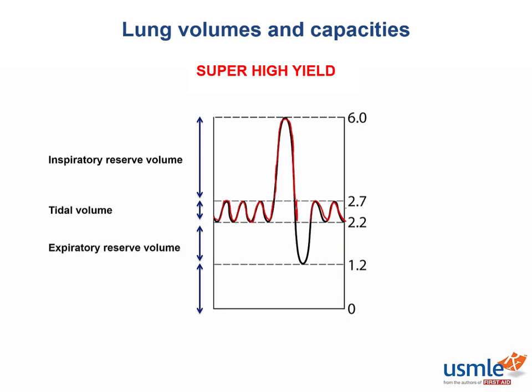The expiratory reserve volume is air that can still be forced out after normal expiration — that's when you blow out as much air as possible. I like to think of it as the low tide mark, where the water on the beach is air in the lungs. It's as low as it's going to get naturally, but there's still some water left in the bay, like there's still a little bit of air left in your lungs after you force everything out.